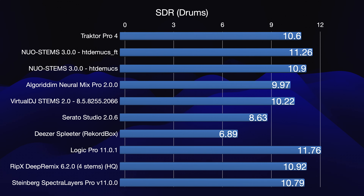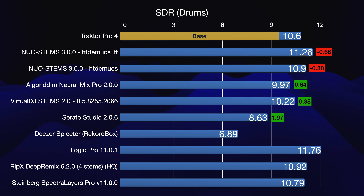As you can see, for drums, Traktor performs worse than NoStems but better than its competition: Algorithm DJ Pro, Virtual DJ, Serato, and Rekordbox. Just for reference, I also added a few other software tools.